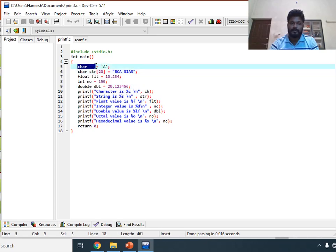First we have declared character ch as 'A' which is enclosed in single quotes. Then char str of size 20, which is a string. Within double quotes we have the string "BCA SIAS".